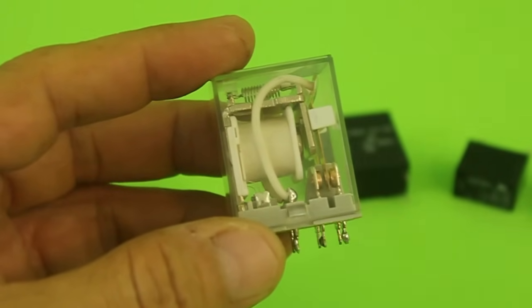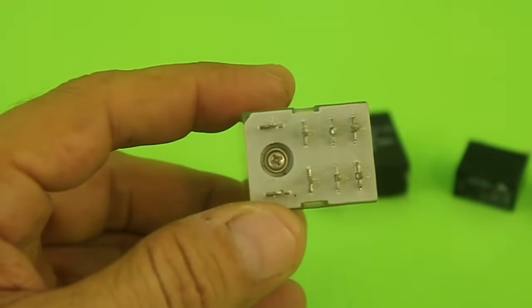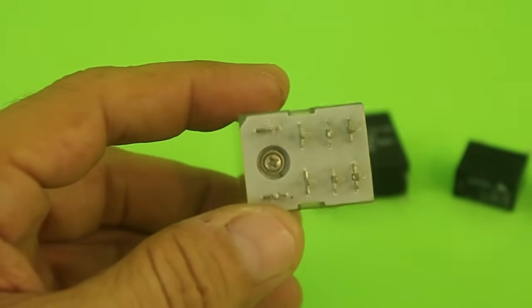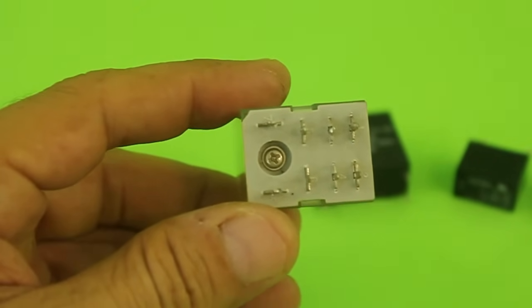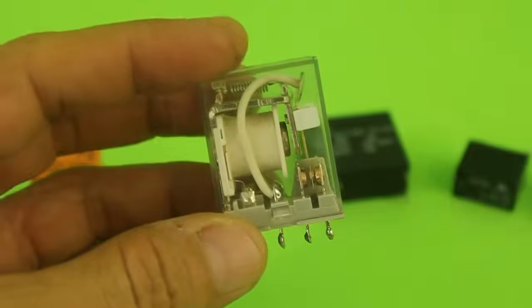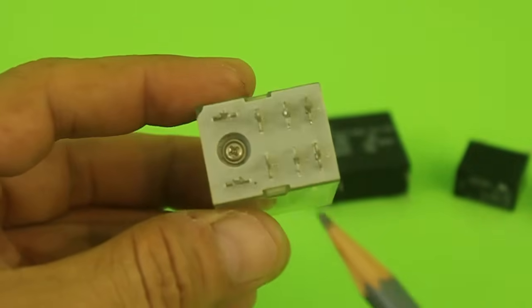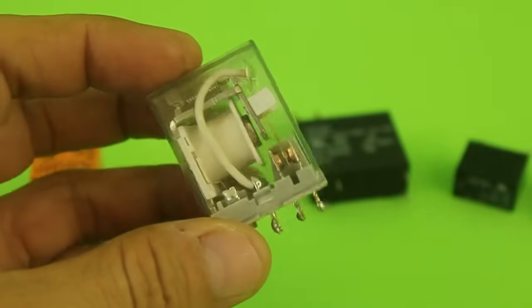Of some hundred ohms. So, it is easy to identify the pair that corresponds to the coil because you will measure some resistance in that pair. All other pairs of contacts will only give you continuity or not because they correspond to the contacts.